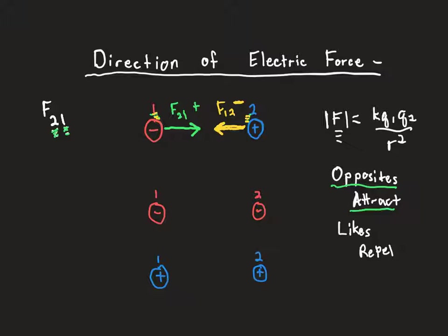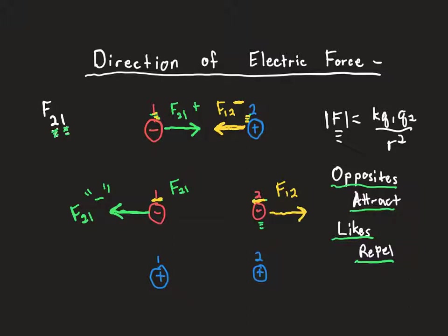We have two more examples. For the force of charge 2 on charge 1 in the next case, these two charges have the same sign, and like charges repel. So because of that second charge, charge 1 is going to be pushed away — the force of charge 2 on charge 1 is going to be negative. By the same reasoning, the force of charge 1 on charge 2: since charge 1 has the same sign as charge 2, charge 2 is pushed away to the right, making that force positive.